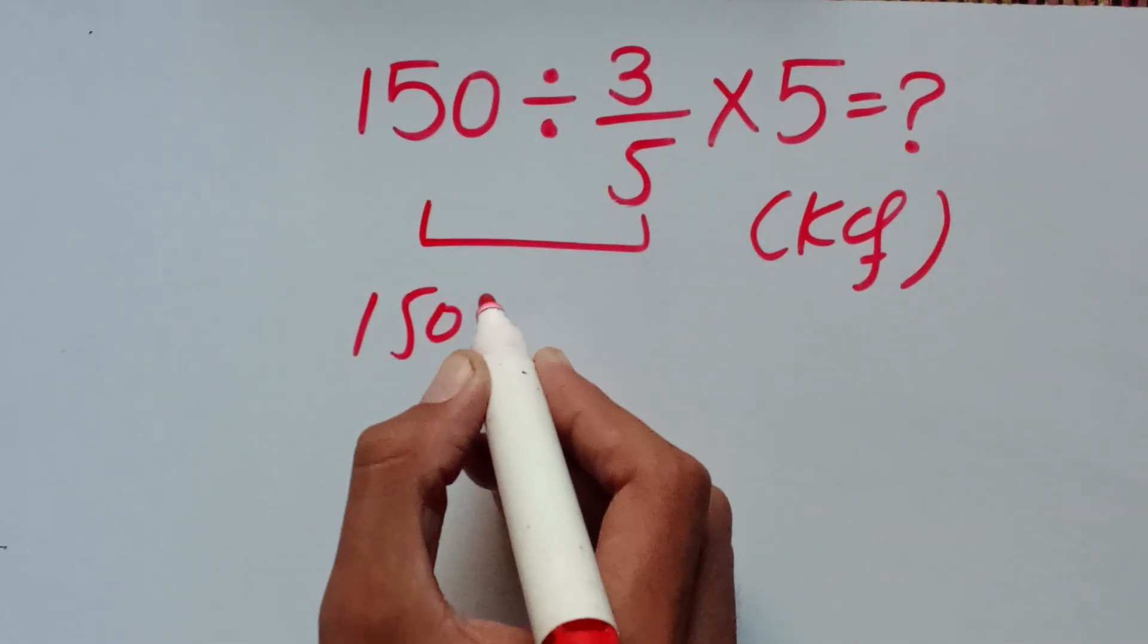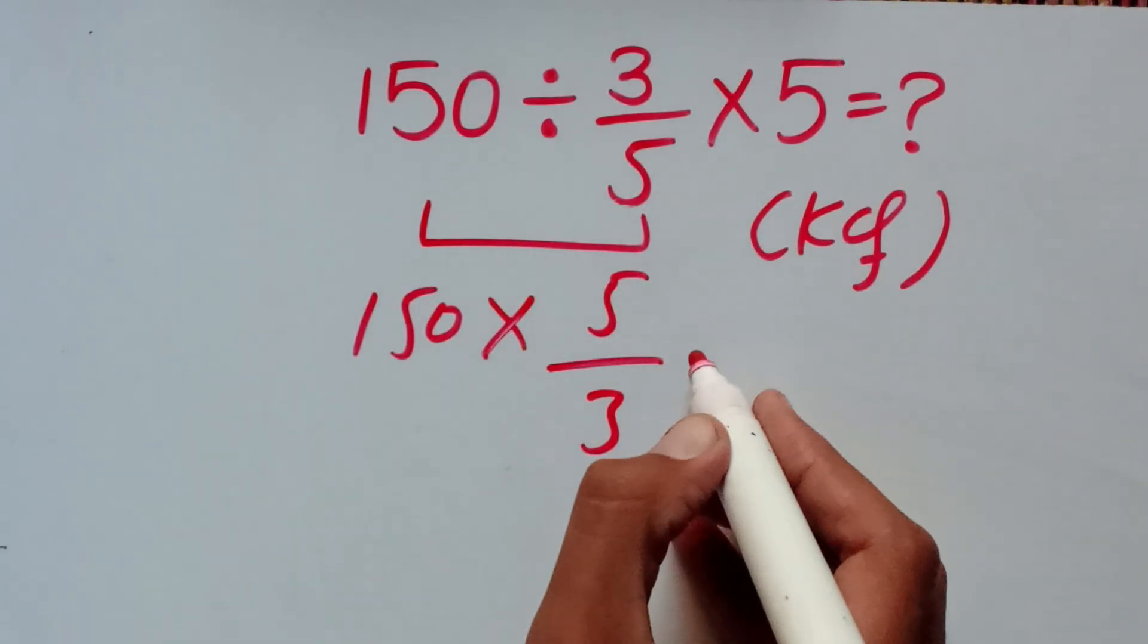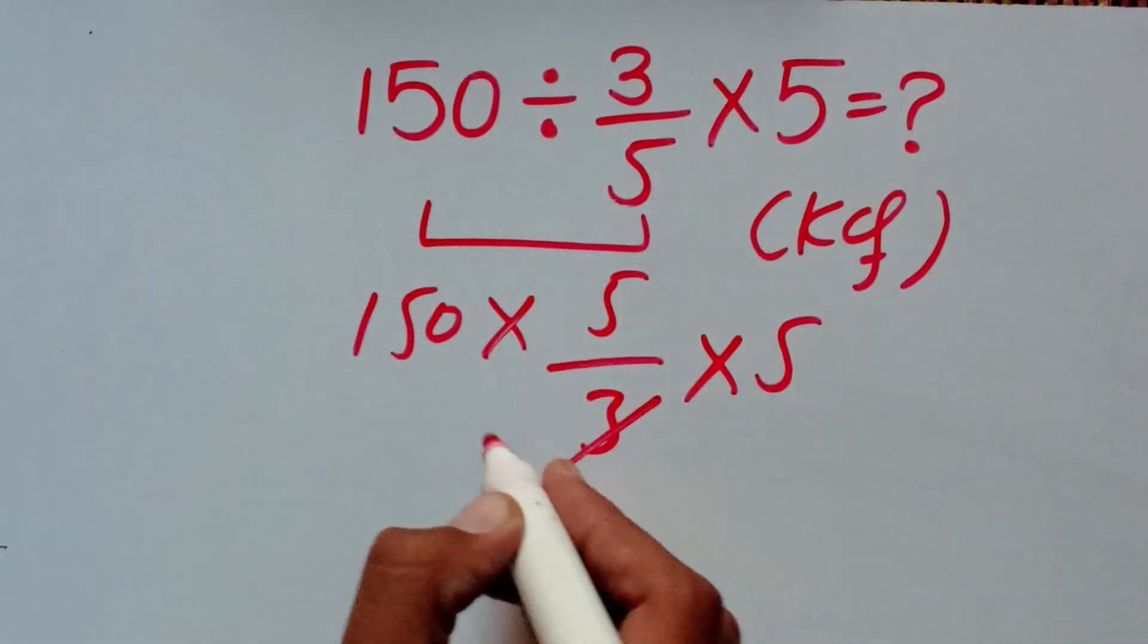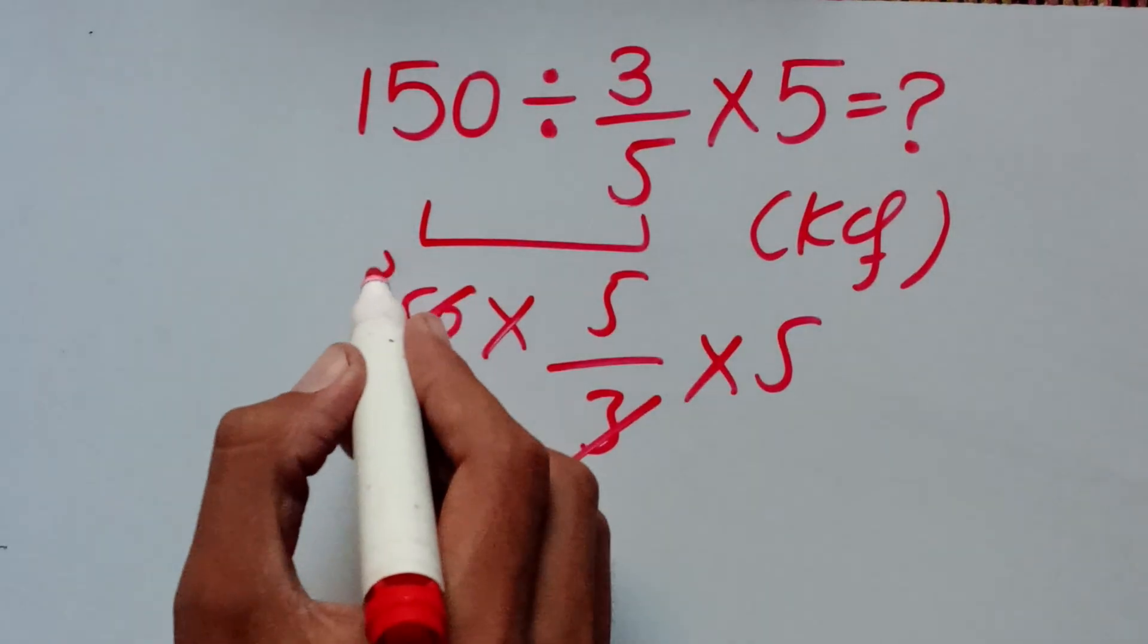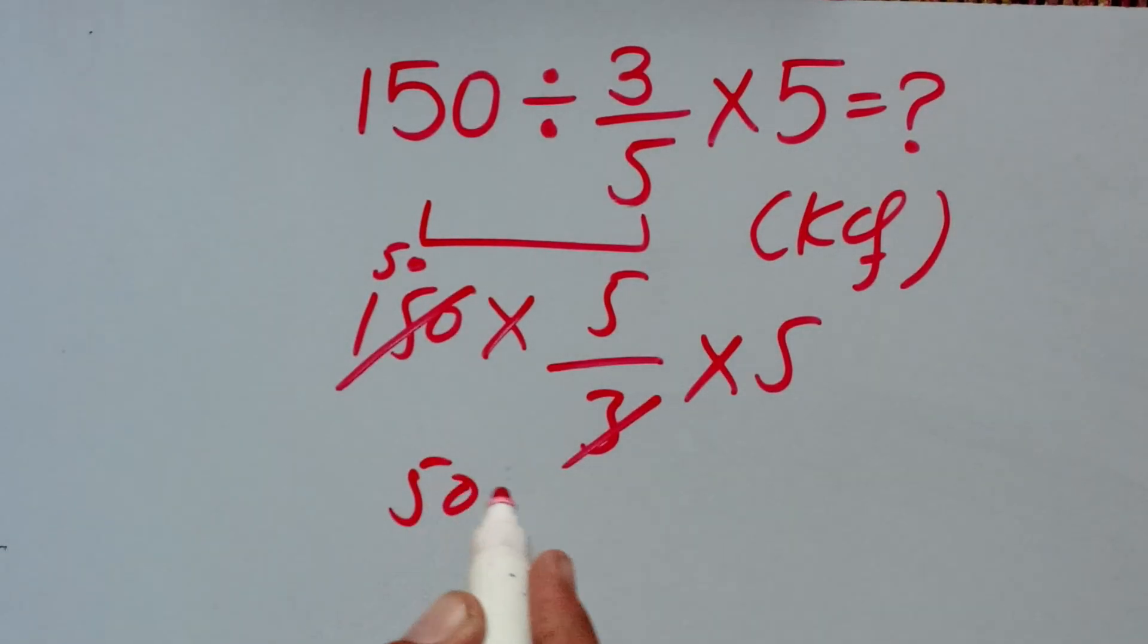We can solve this question as 150 times 5 divided by 3 times 5. Now 3 and 150 cancel with each other, and we have 50 times 5 times 5.